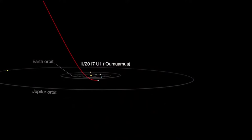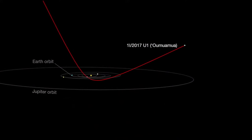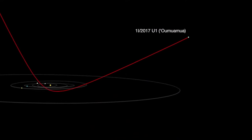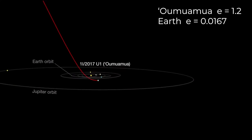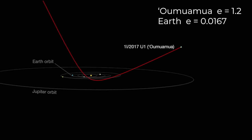For example, the giveaway that Oumuamua, the first interstellar comet, was not from around here, was that its eccentricity was 1.2. The eccentricity of Earth's orbit is only 0.0167.